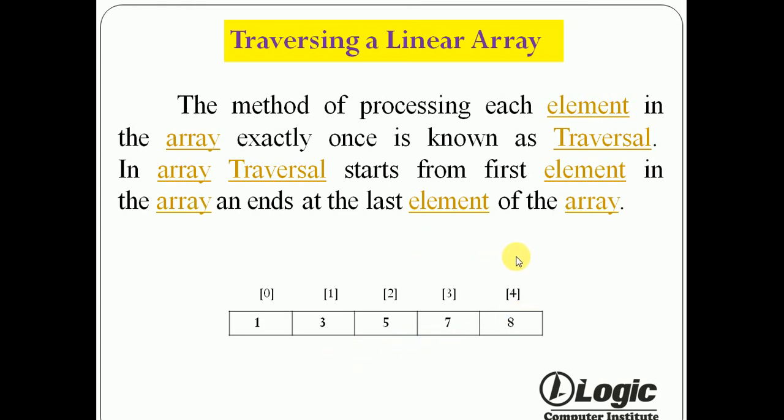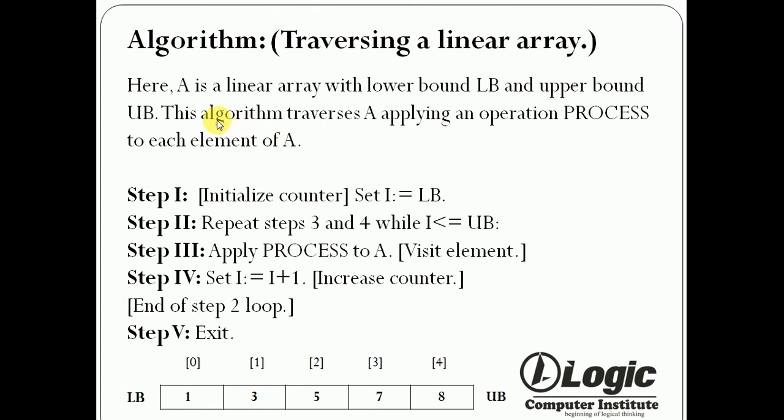So this is traversing a linear array, and an algorithm is used for processing each element in the linear array. This is the algorithm and here A is a linear array with lower bound LB and upper bound UB.